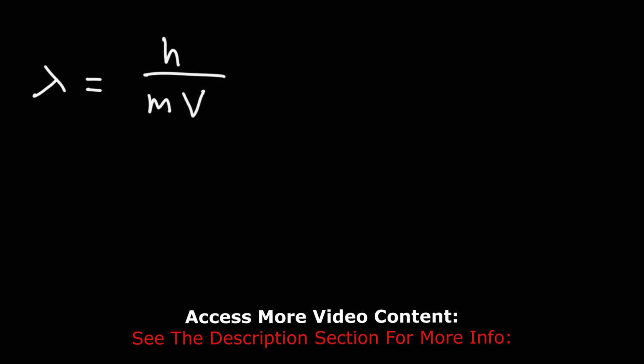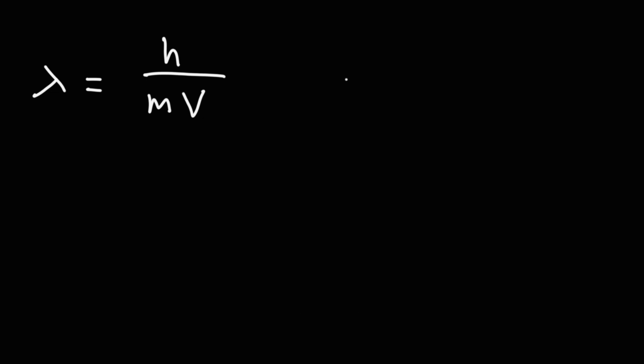The next formula is de Broglie's wavelength. To calculate the de Broglie wavelength, it's equal to Planck's constant divided by the mass of the object times its speed. If you need to calculate the momentum of a particle or even a photon, it's simply mass times velocity, and you can also calculate momentum as Planck's constant divided by the wavelength.